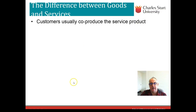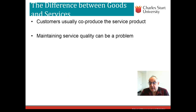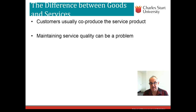Some other differences between services and goods: customers usually co-produce the service. Maintaining consistent quality, because of inseparability and variability, is a major issue. If this subject were taught by somebody else, the experience and service quality would be different — better or worse. This is a huge problem for a service provider like Charles Sturt University, one of the largest online providers in the country. The answer lies in training and recruitment, so a lot of HR issues come into services as well.